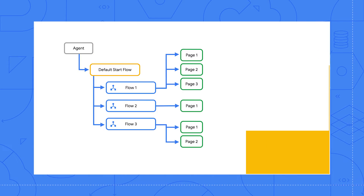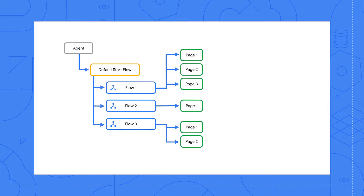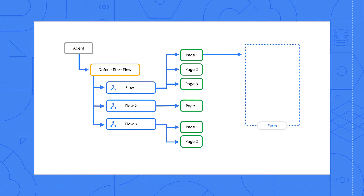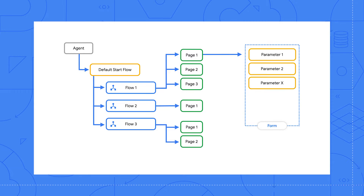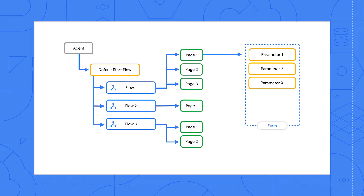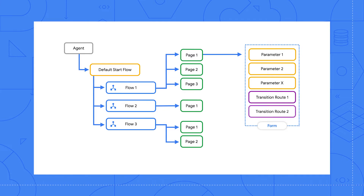Now let's understand pages. Think of pages in CX as web pages. When we fill the fields in the form on a web page and submit it, we receive a corresponding response. Similarly, a page in CX has a form that is configured to collect information or parameters from the end users. This information is relevant to the conversation state on that page.